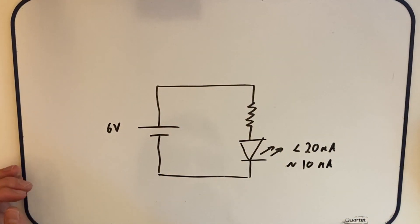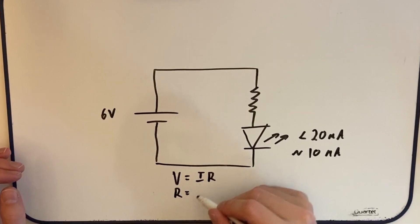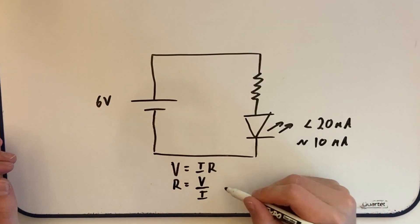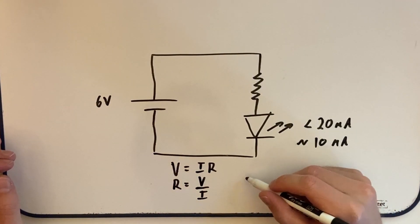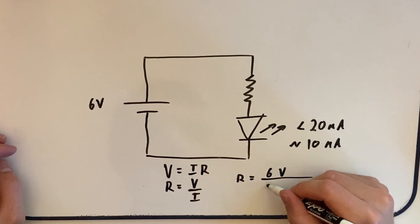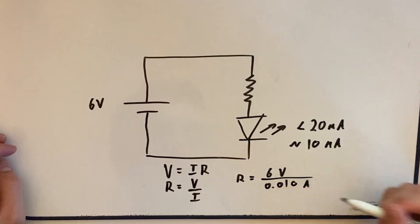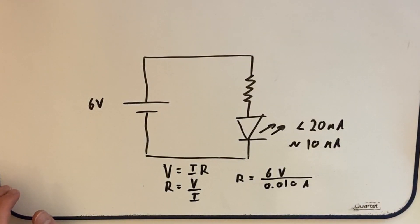Next we're going to use Ohm's law to figure out what our resistor value should be. The classical equation is V equals IR, voltage equals current times resistance, and rearranging for resistance we get R equals V over I. Then we just plug in our values, 6 volts over 10 milliamps, but since we're using SI units we have to convert milliamps to amps. You divide 10 milliamps by 1000 and you end up with 0.01 amps.